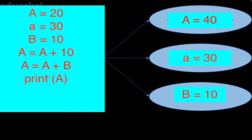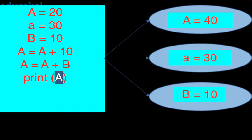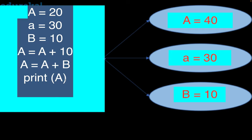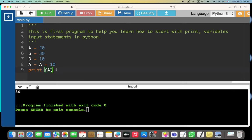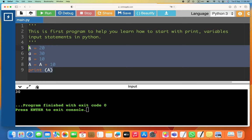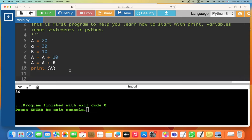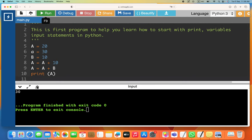Let's copy this, go back to the compiler, paste it, and run it. It prints 40 — you can see it printed 40.